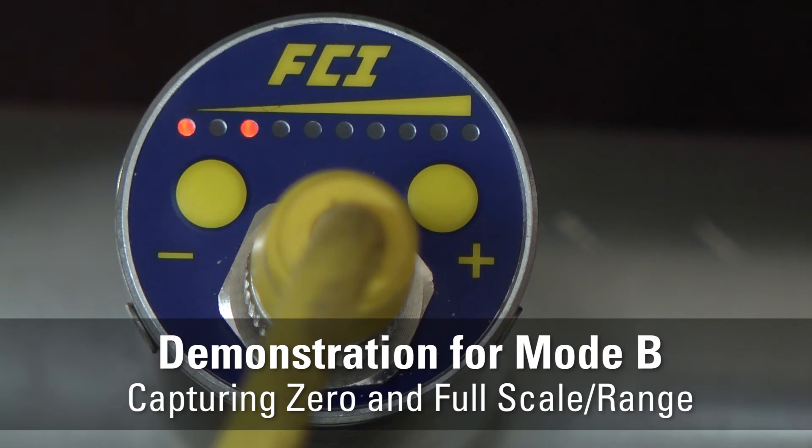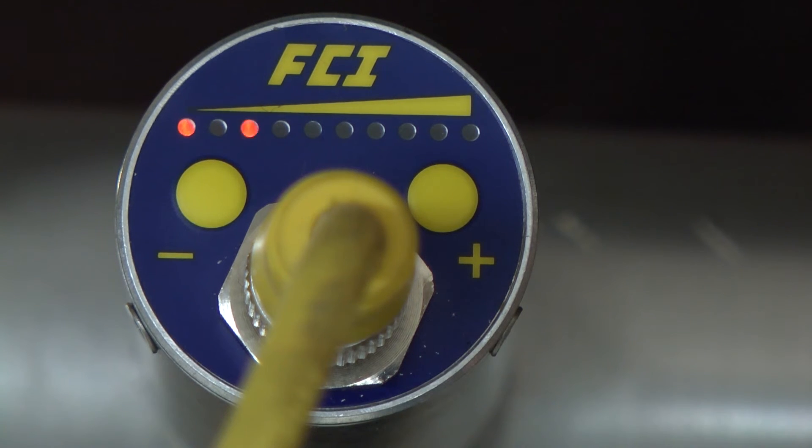Demonstration for Mode B: capturing the zero and full scale, or range. Assume a low flow alarm in a small tube, so we will use the minus button for lower heater excitation setting.